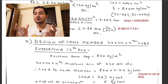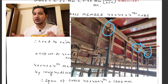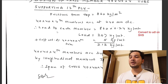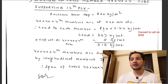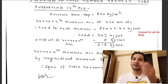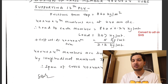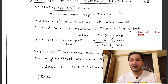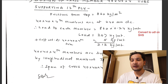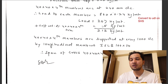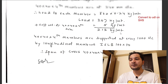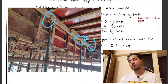The plywood is supported on square tubes, which in turn are supported on channels or ISMBs. The load on each square tube member is 860 kg/m² multiplied by the span of the plywood (0.24 m), giving 207 kg/m — this is the UDL from the plywood acting on the square tube. Adding the self-weight of the 40 × 40 × 4 mm tube (obtained from the IS code running meter weight), the total load on the square tube is 212 kg/m.